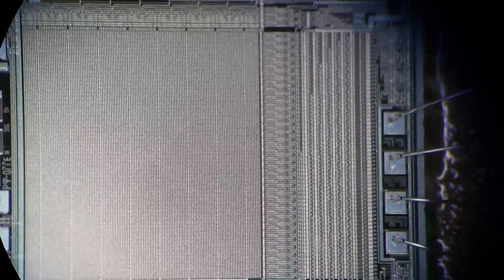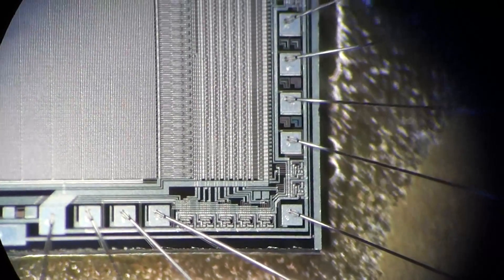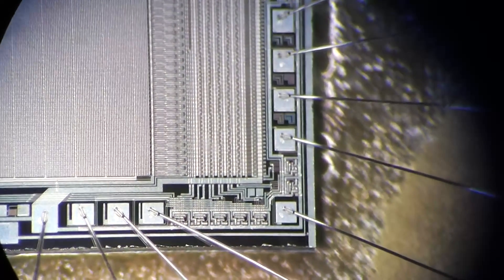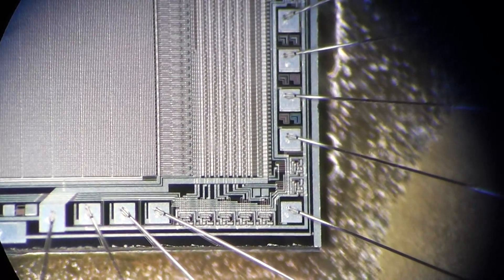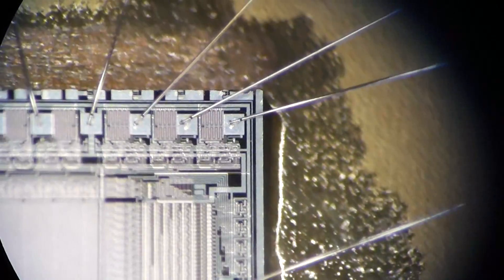You can nicely see to the left the actual storage and the bonding wires on the bottom on the right, and then on the right this is probably some decoding logic, some multiplexers or something like that.